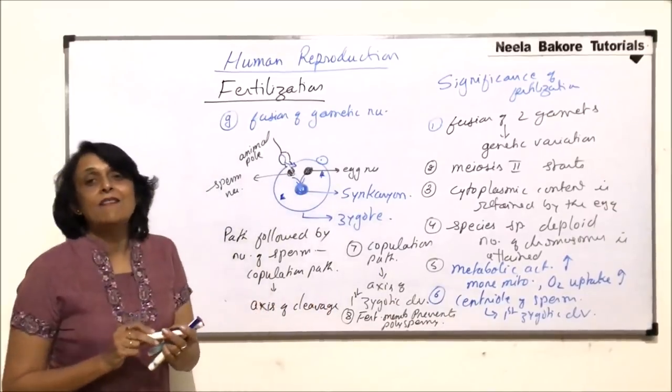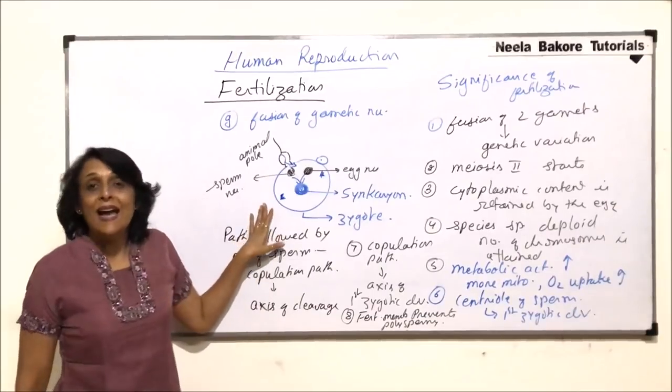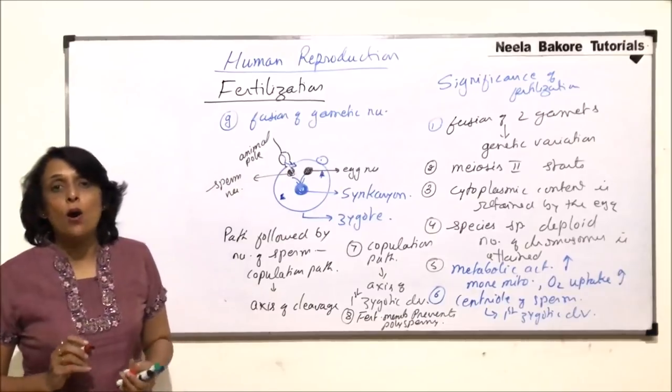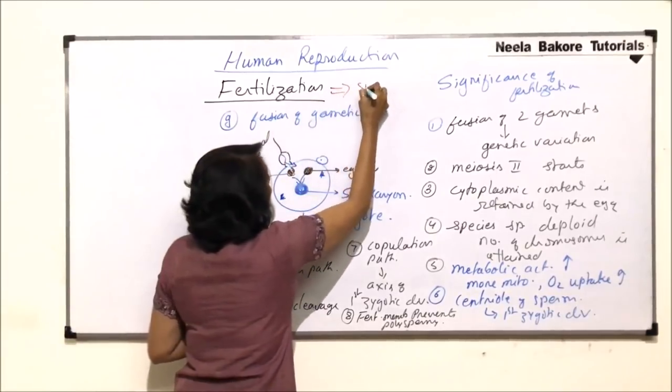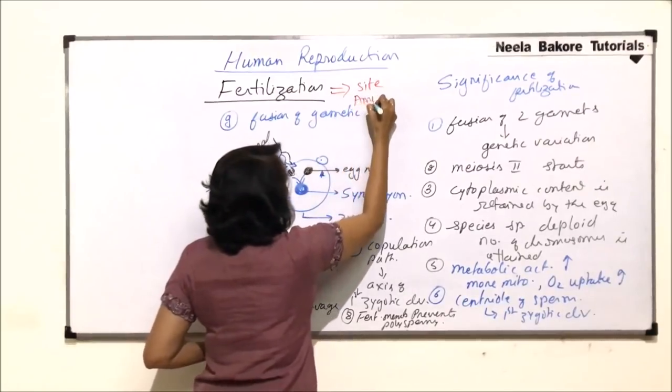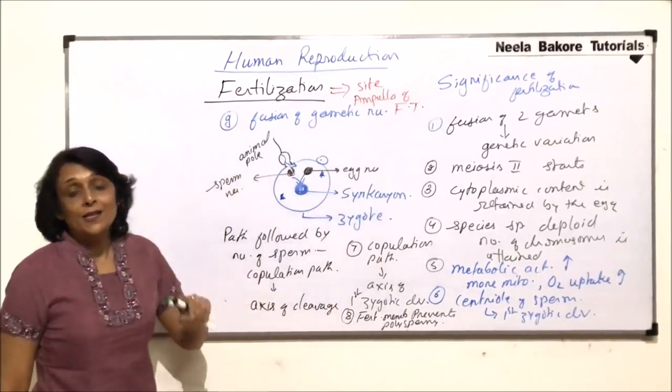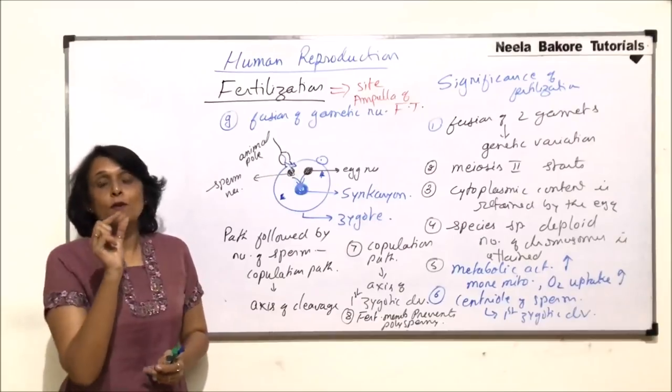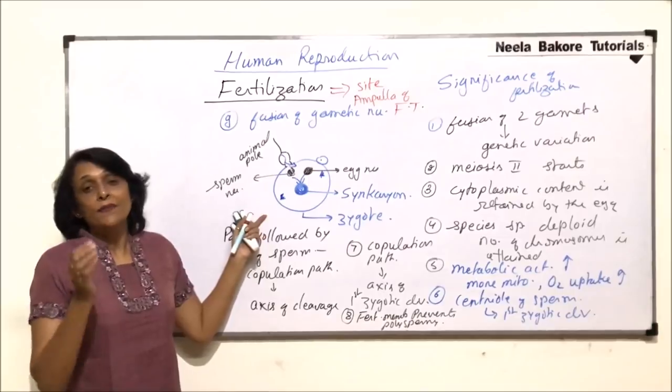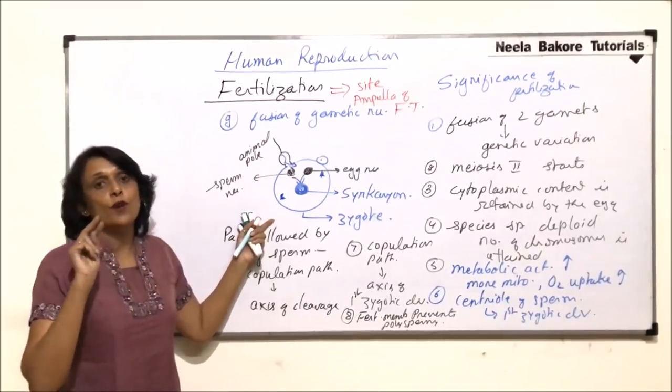So all these points are very important when we talk of the process of fertilization. Zygote is formed. Fertilization takes place in ampulla of fallopian tube. So the site where this fertilization is taking place is the ampulla of fallopian tube. Fertilization normally takes place between 14th to 16th day. Egg was released on the 14th day of the menstrual cycle. It stays in the fallopian tube for about two days.